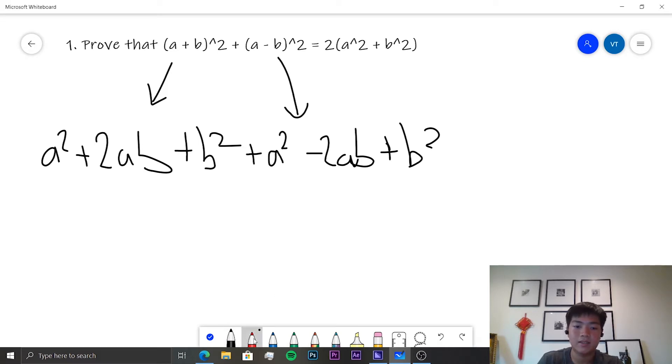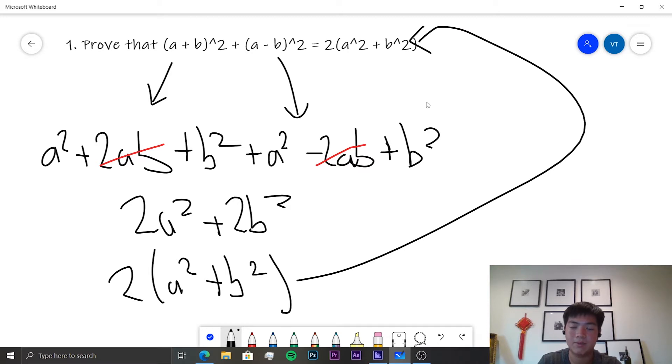Looking at this, we can simply cancel out the +2ab and -2ab. And that leaves us with 2a² + 2b², which we can also write in the form 2(a² + b²), which is exactly what we need to prove that it equals up here. So that was all for this first proof. Pretty simple.